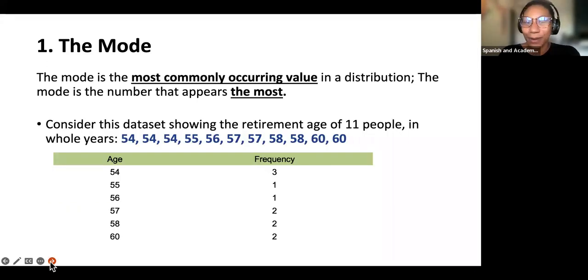Let's start off with the mode. The mode is the most commonly occurring value or number in a distribution. The mode is a number that appears the most. You can also think of the mode as the majority. For example, if I have a clinic and there are 10 people in my clinic and seven of them are experiencing chronic depression, then the modal group or the majority of the people at my clinic are experiencing chronic depression.